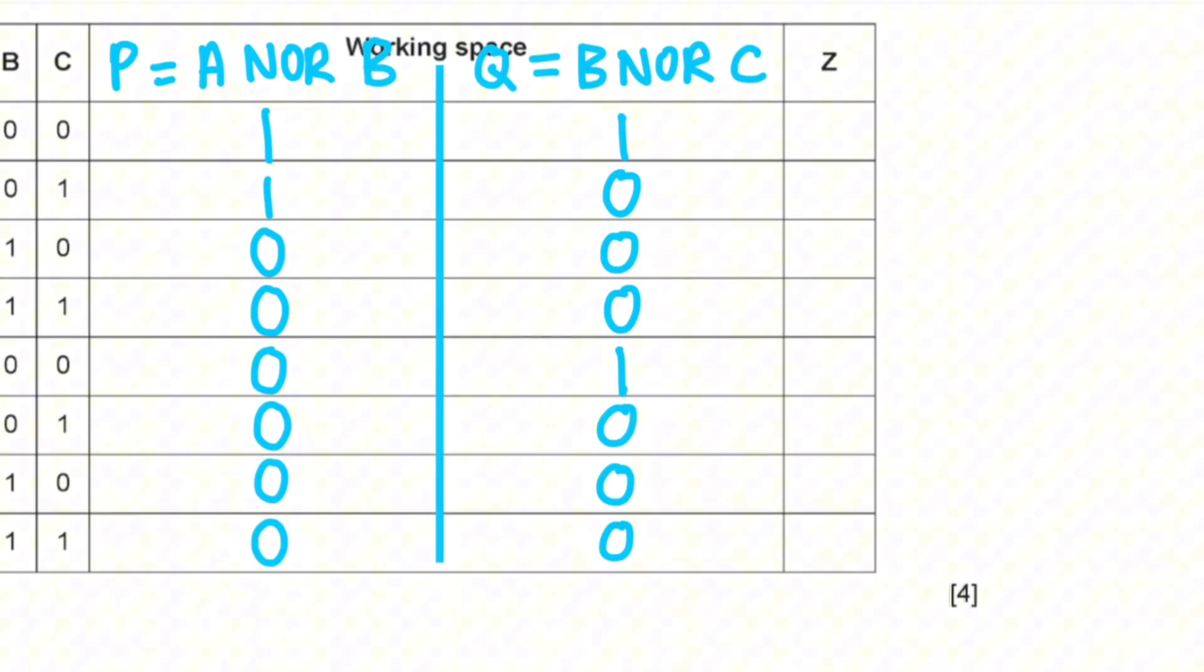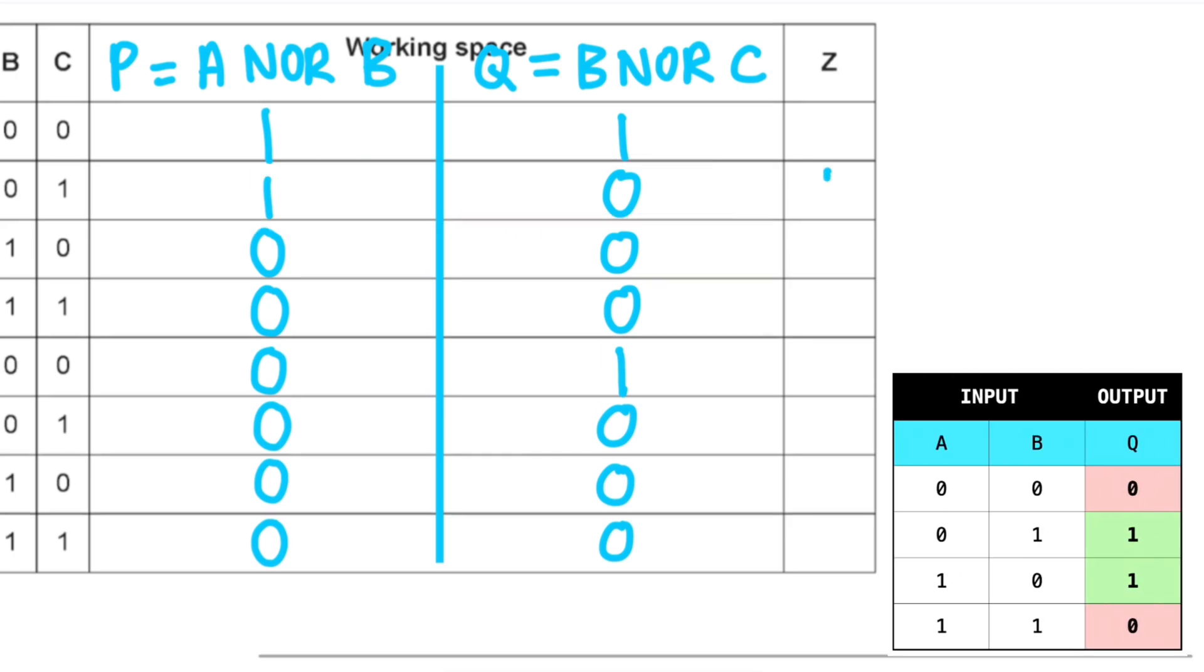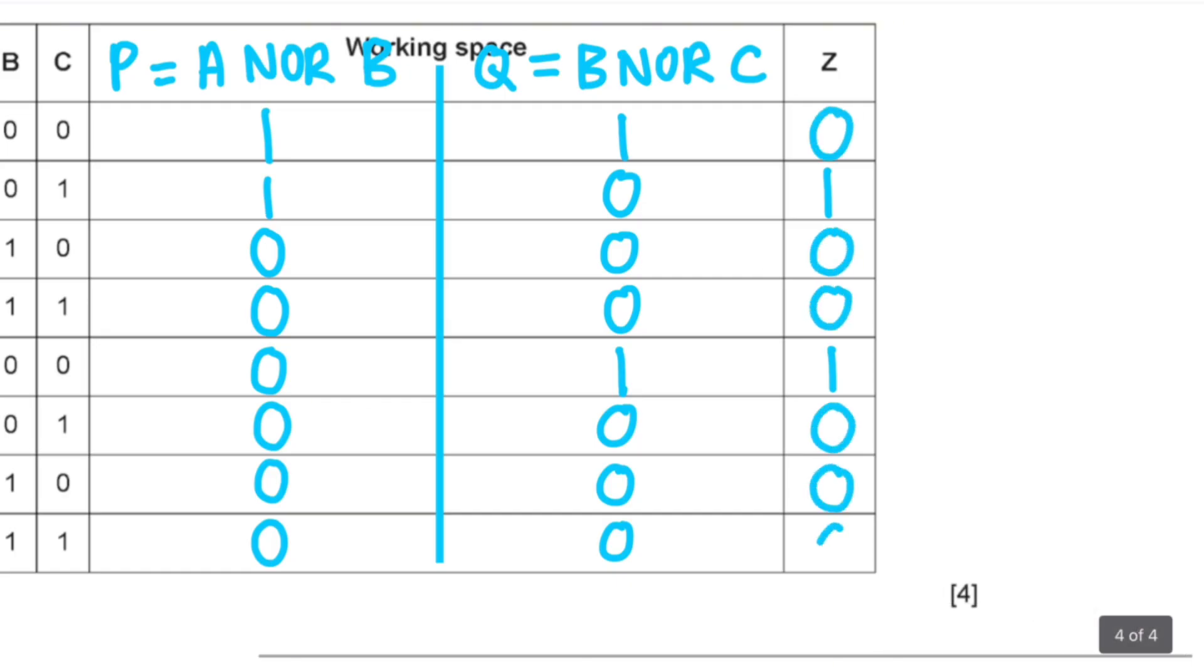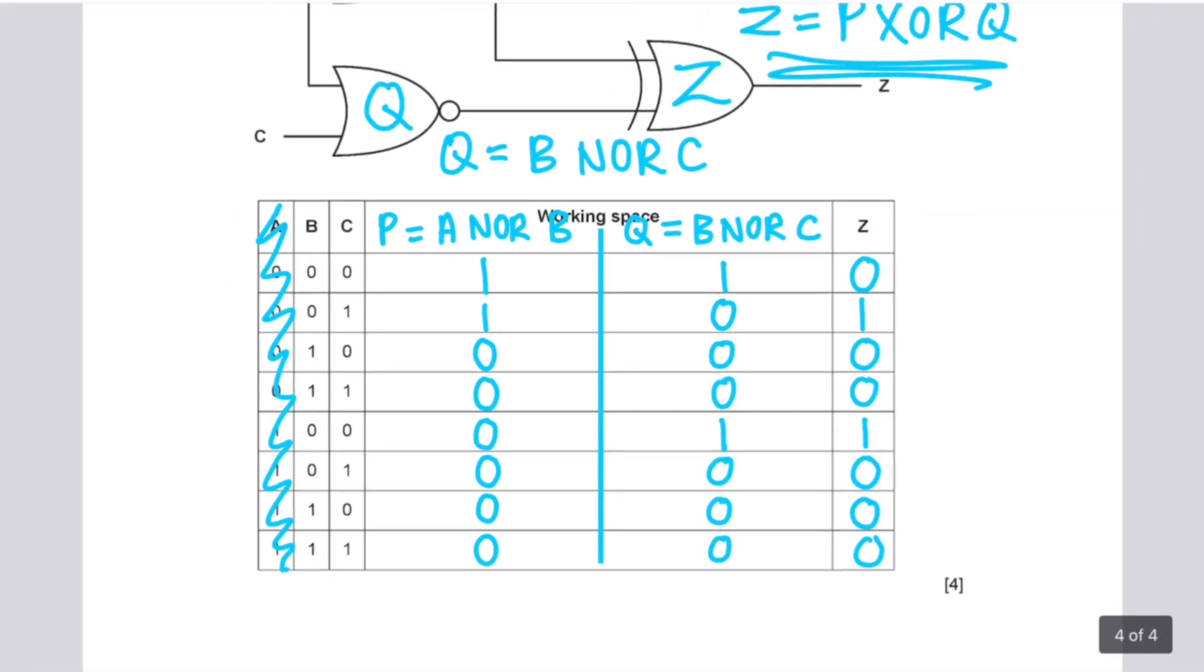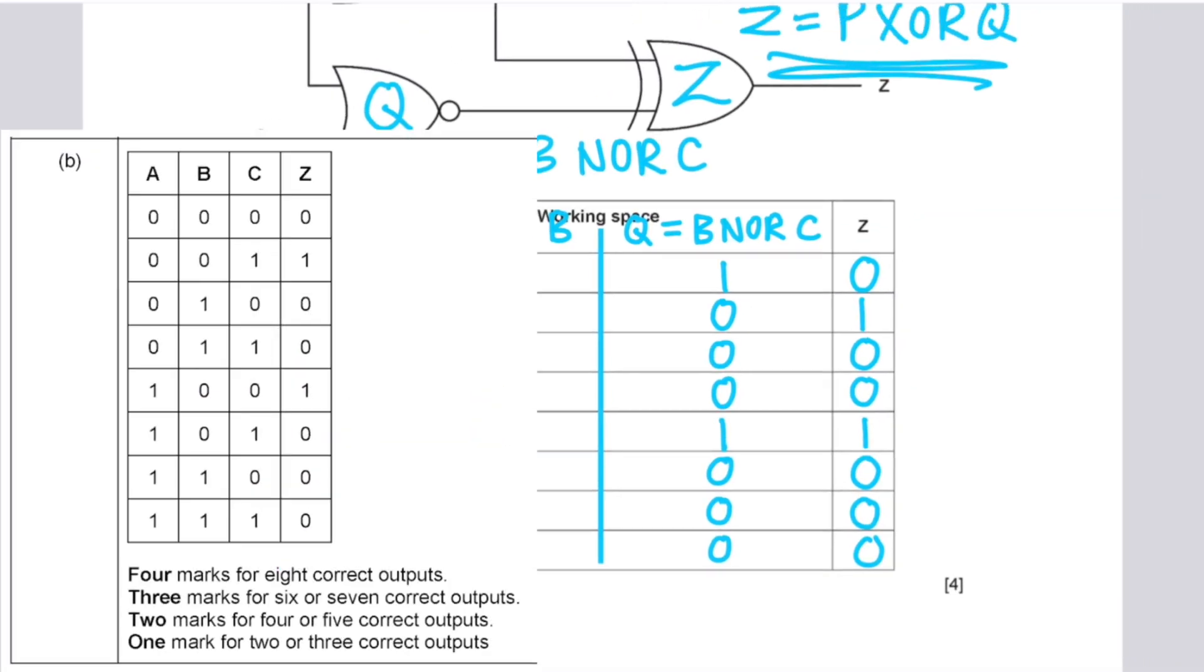So what do we know about the XOR gate? It only produces a one if both the inputs are different. The inputs cannot be the same. So every time we see that the inputs are different, we will write a one. For the rest, we write a zero. So that's our final answer. So let's check the mark scheme. And as you can see, we got it all correct.